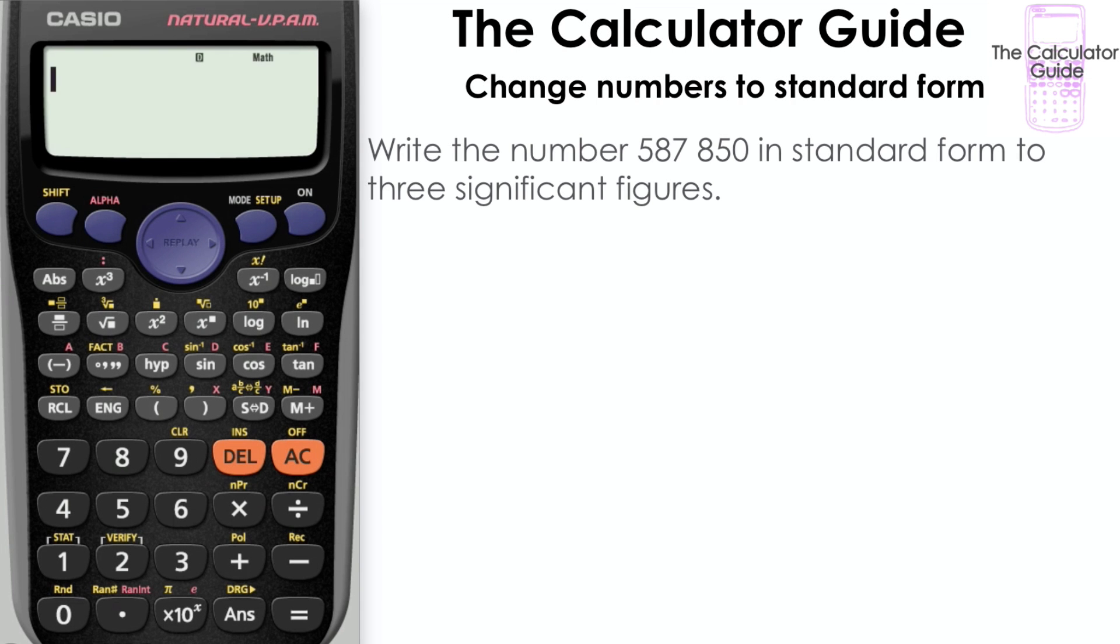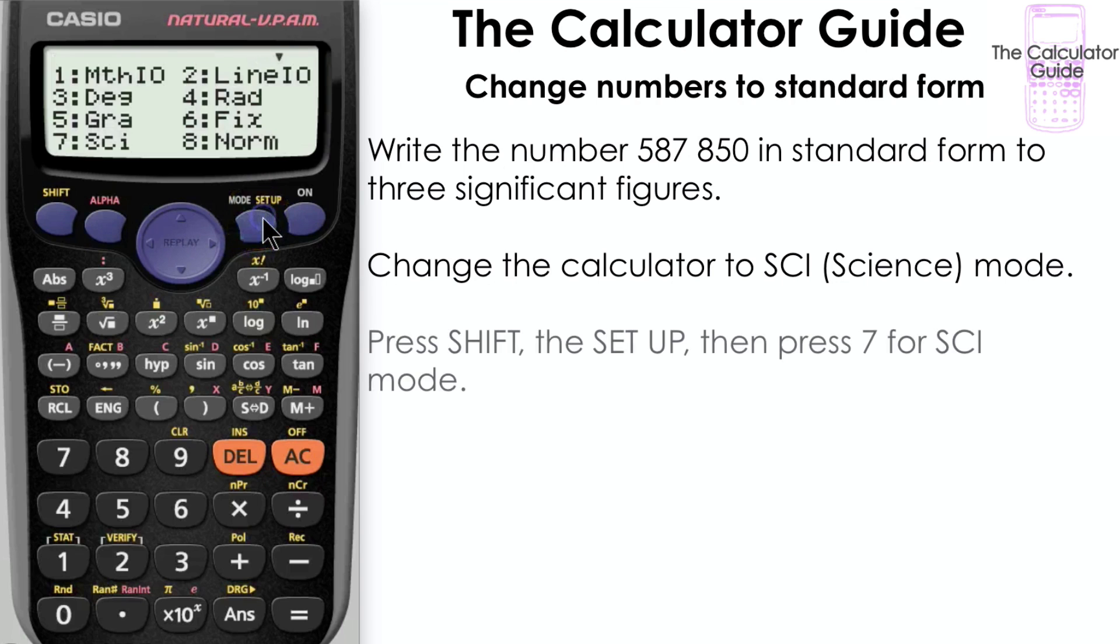We are going to use the calculator to help us write the number 587,850 in standard form to three significant figures. We're going to change the calculator to SCI or science mode.